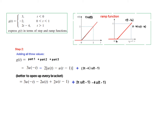If the ramp function is shifted by amount t₀, its name changes to r(t - t₀) and its value is (t - t₀)·u(t - t₀). In our case, to get r(t-1), we need both (t-1) and u(t-1). We have u(t-1), but only t, so we must convert t into (t-1).